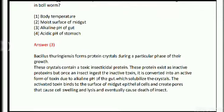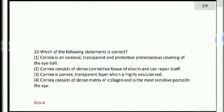Bacillus thuringiensis forms protein crystals during a particular phase of their growth. These crystals contain a toxic insecticidal protein that exists in an inactive prototoxin form. Once an insect ingests the inactive toxin, it is converted into an active form due to the alkaline pH of the gut. When activated, it solubilizes the crystals, and the activated toxins bind to receptors on the midgut epithelial cells and create pores.